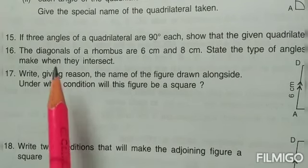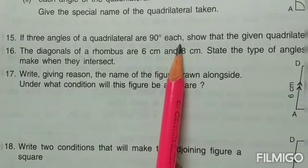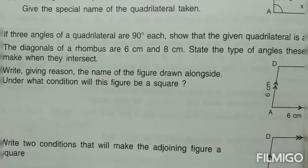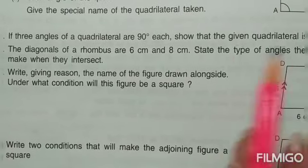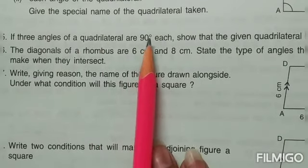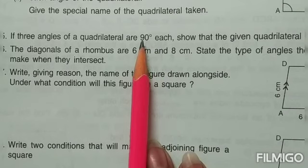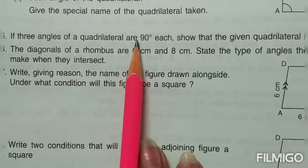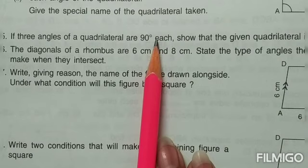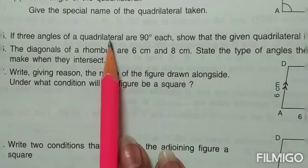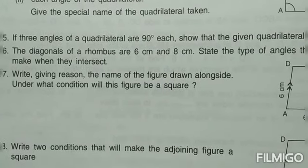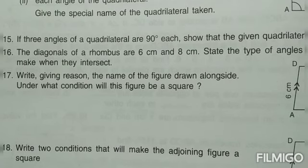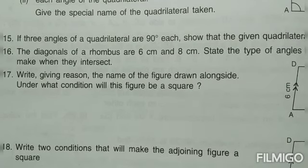Question number 15: if three angles of a quadrilateral are 90 degrees each, show that the quadrilateral is a rectangle. Adding three 90-degree angles gives 270. Subtracting from 360 gives the fourth angle as 90 degrees as well. Since all four angles are 90 degrees, the given quadrilateral is a rectangle.